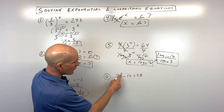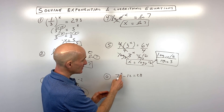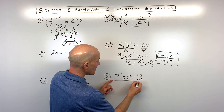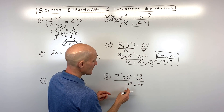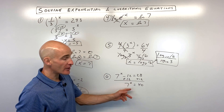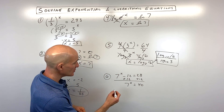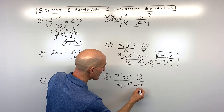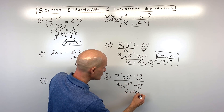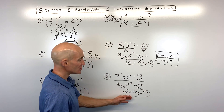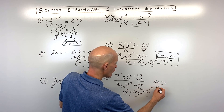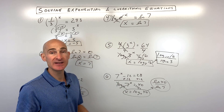For number 6, we want to solve for x. Again, work from the outside in — add 12 to both sides, giving us 7 to the x equals 40. We can't get the bases the same, so we take log base 7 of both sides. Those are inverses, and we end up with x equals log base 7 of 40. Using the change of base formula with natural logs: that's natural log of 40 over natural log of 7. Put it in your calculator for a decimal approximation.